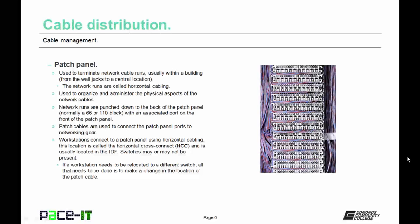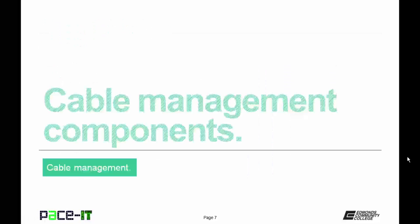Workstations connect to the patch panel using horizontal cabling. This location is called the horizontal cross connect, or HCC, and is usually located in the IDF. Switches may or may not be present in this location. If a workstation needs to be relocated to a different switch or port, all that needs to be done is to make the change at the patch panel — simply unplug the cable from one port and plug it into a new port.